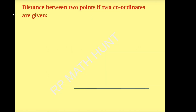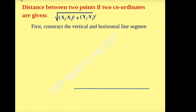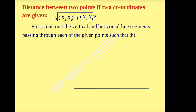Now let us discuss the derivation of the distance between two points when two coordinates are given. That is, the distance between two points is the square root of (x2 − x1)² + (y2 − y1)². First, construct the vertical and horizontal line segments passing through each of the given points such that they meet at a 90-degree angle.